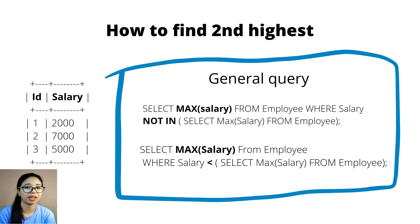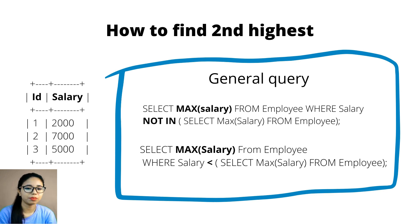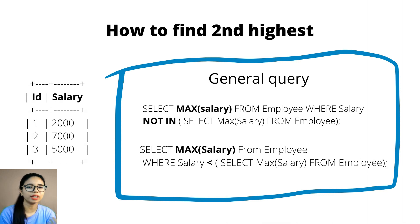First we are finding the second highest salary, and this is a really popular question among interviewers. There are multiple ways to calculate the second highest salary. What you are seeing on the screen is a general approach — that means you can use this approach on SQL Server or MySQL. As we know, we have multiple database options, and just like any programming language, each DB has its own syntax or keywords. This approach works on both MySQL and SQL Server.